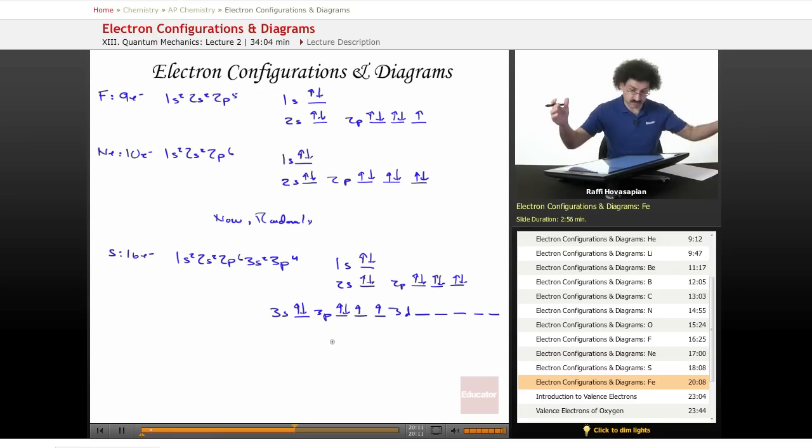Let's do iron. Iron has 26 electrons. It is 1s2, 2s2, 2p6, 3s2, 3p6, 4s2, 3d6.